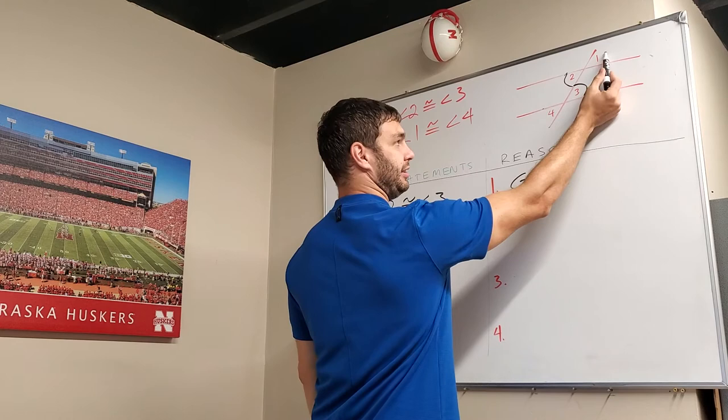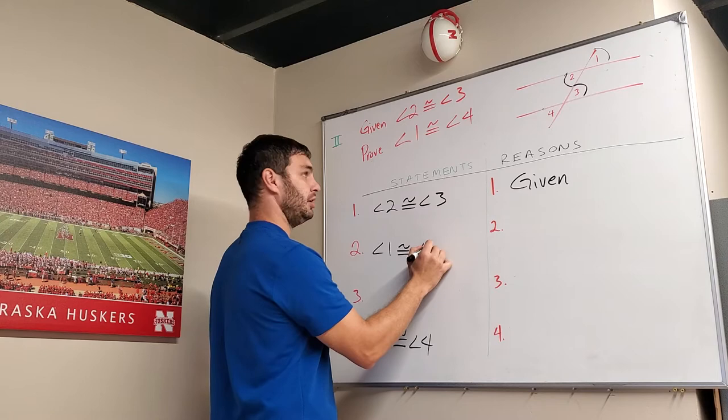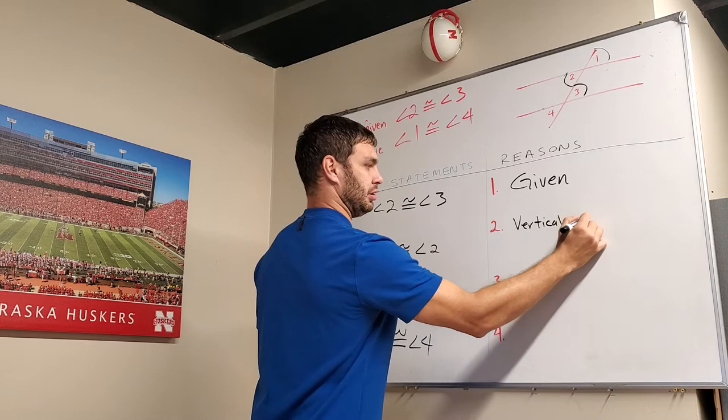And I know that angle 1 and angle 2 are congruent because of vertical angles. So I'm going to say that. I'll say angle 1 is congruent to angle 2. And the reason is vertical angles.